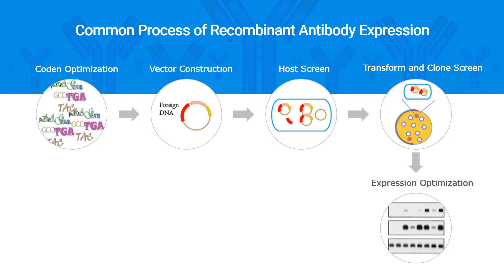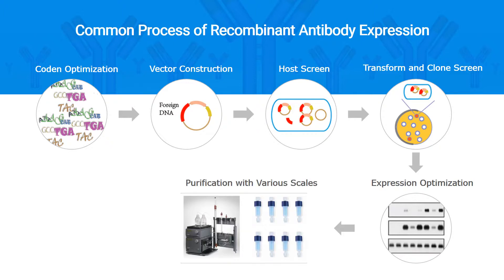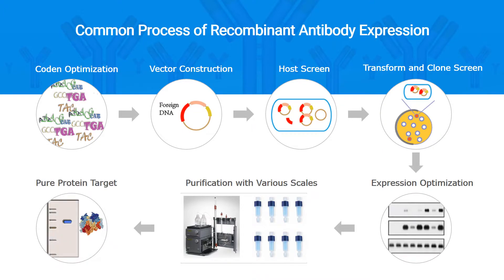Step 5: Optimize expression conditions, such as temperature, pH, or adding some biomolecules to promote expression. It is common to produce some toxins or other harmful substances when expressing antibody in hosts. Therefore, protein purification is necessary in recombinant antibody production. Finally, Step 7: based on the predictable structure, identify the function of the purified protein.